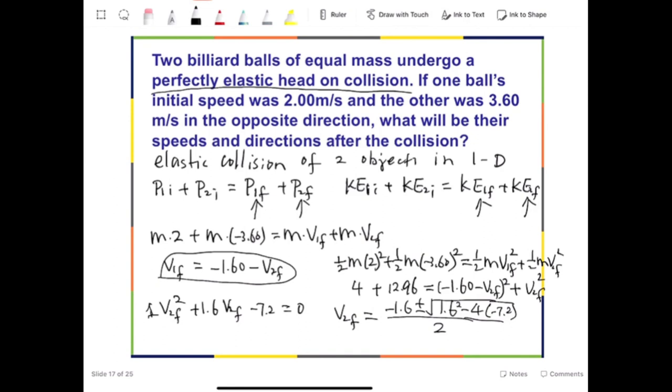So a quadratic equation can be solved by using a quadratic formula, which means that v₂f is equal to minus 1.6 plus or minus square root of 1.6 squared minus 4 times 1 times negative 7.2 divided by 2. So v₂f, if you solve, can be either 2 or negative 3.6. Now, if v₂f is 2 or negative 3.6, then v₁f is going to be negative 3.6 or 2. If you plug v₂f back into here, you can solve v₁f. So also, there are two possible roots.